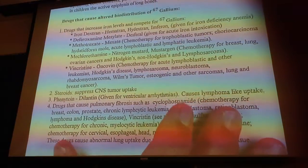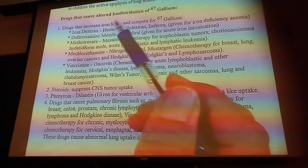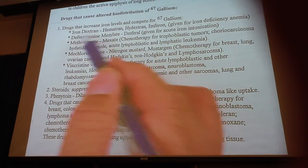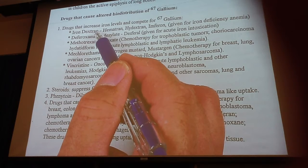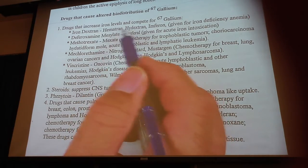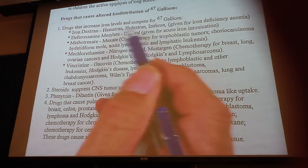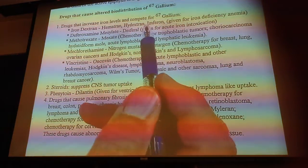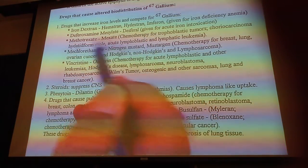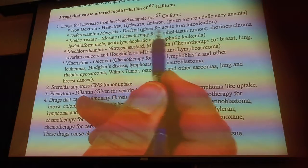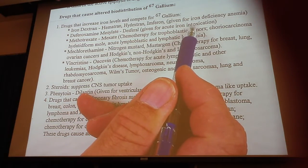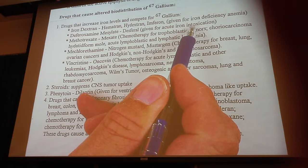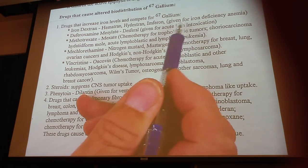Drugs you have to make sure the patient is not taking include any vitamin supplements that have iron in them. Iron dextran is probably the worst — if you have iron deficiency anemia, the patient will be taking that. Deferoxamine (Desferal) is used when a patient has taken too much iron, such as in iron poisoning, though that's relatively uncommon.